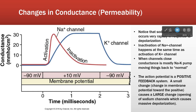A positive feedback mechanism is where a small change makes a big change. Another example we'll discuss at the end of the course is childbirth. An action potential is the same kind of thing — a small change makes a lot of things happen.